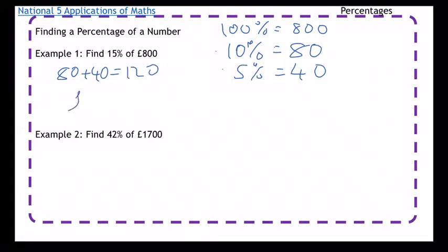For the second example, we want 42% of 1700. I'm going to start with 100% equals 1700. Then 10% is 170, and 1% is 17. So I've got 10% and 1%, and I'm going to try and find 40%.